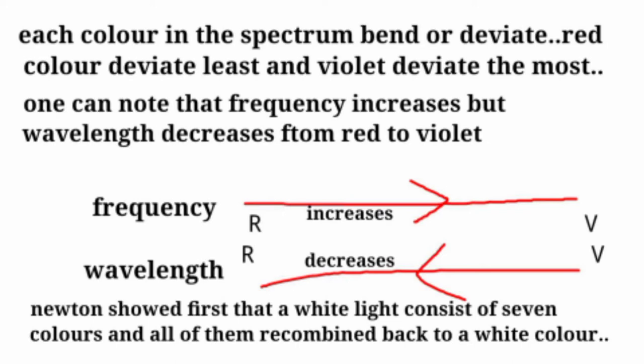One can note the frequency increases but wavelength decreases from red to violet. And here is the diagram. Newton showed first that the white light consists of seven colors, and all of them recombined back to a white color.